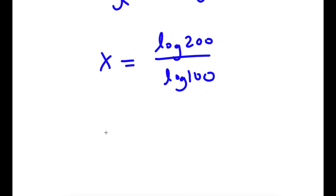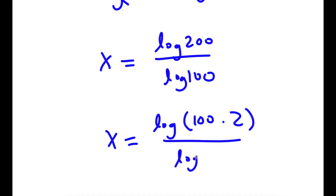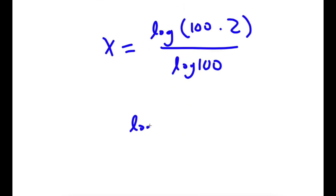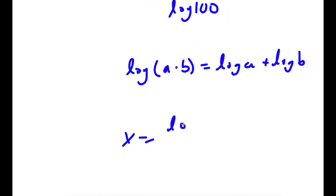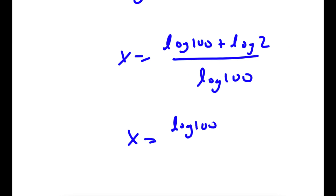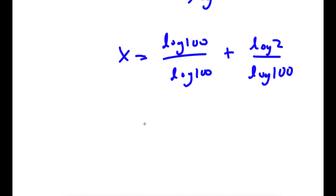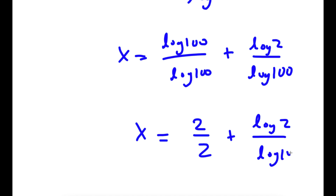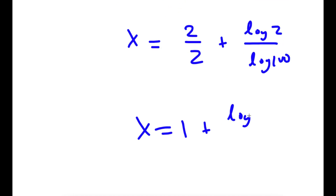Now, log 200 is the same thing as log of 100 times 2, and I have this over log 100. If I have something in the form log of a times b, this equals log a plus log b. So log 100 times 2 equals log 100 plus log 2, over log 100. So now I have log 100 over log 100 plus log 2 over log 100. Now log 100 is equal to 2, so I have 2 over 2 plus log 2 over log 100, which equals 1 plus log 2 over 2.